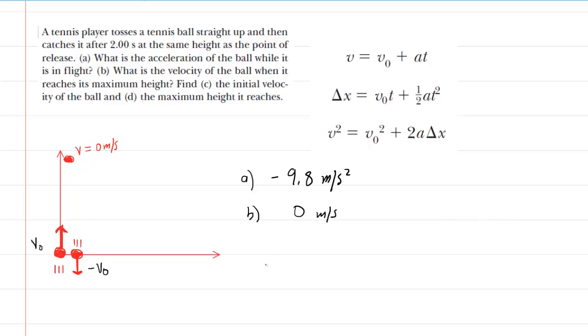So A and B are more conceptual type of questions. But part C, we're going to make a calculation. We need to calculate the initial velocity of the ball. Now, let's write down the things that we know once again. So we know that the acceleration is negative 9.8 meters per second squared. We know the time that it took for the ball to go up and then back down was stated as 2 seconds.